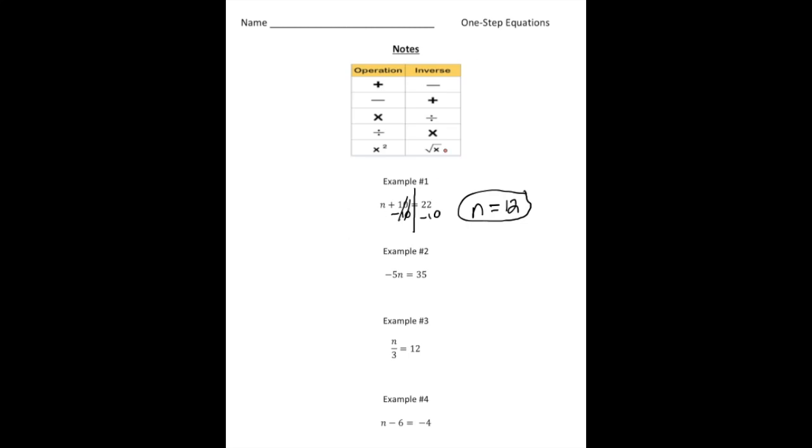Example number two, we have negative 5 times n equals 35. Now remember, this means negative 5 times n, right? So the inverse of multiplying is dividing. So we're going to divide both sides by negative 5, by negative 5. There it is. I'm going to put our little line here.